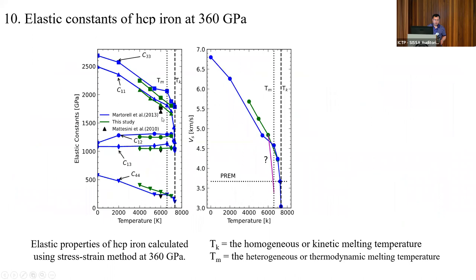We extend our elastic constant calculations at 360 GPa up to 7000 K. Our results agree very well with previous studies. Based on these elastic constant calculations we estimate sound velocities at Earth's inner core conditions. Our calculations suggest that for HCP iron the shear velocity is about 20% larger than real seismic observations. This is a first-order Earth science problem — how do we explain the very low shear velocities at Earth's inner core conditions — and we are still working to find a possible cause.